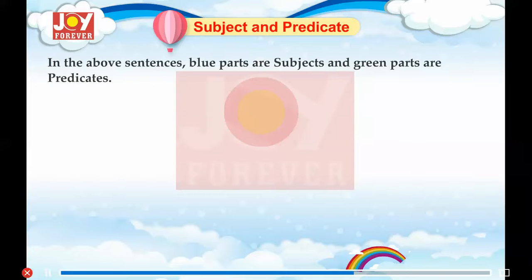In the above sentences, blue parts are subjects and green parts are predicates.